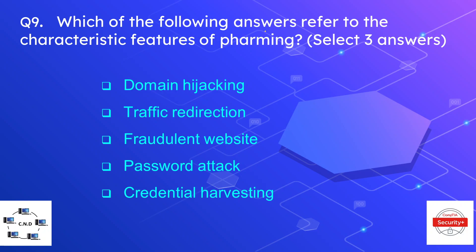Question number nine: which of the following answers refers to characteristic features of pharming? Select three answers. The options are domain hijacking, traffic redirection, fraudulent website, password attack, and credential harvesting. The correct three answers are domain hijacking, traffic redirection, and fraudulent website — all of which are methods or features of pharming.